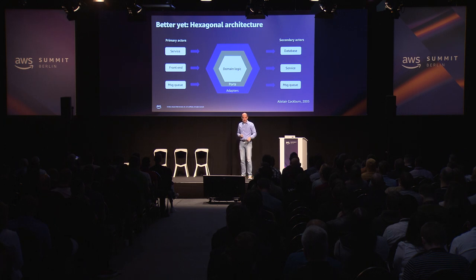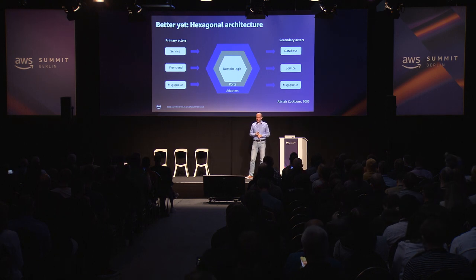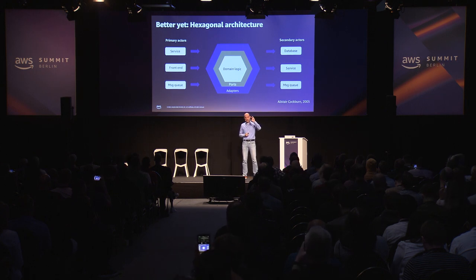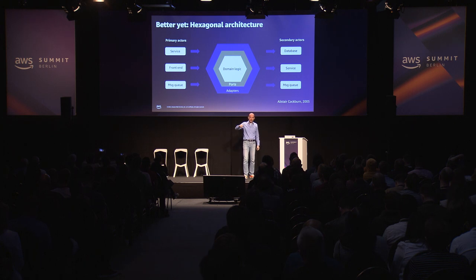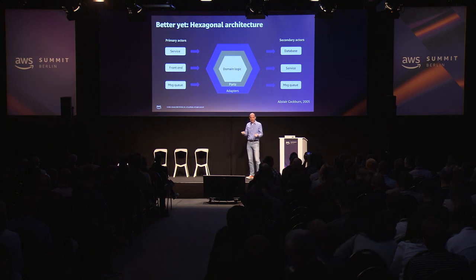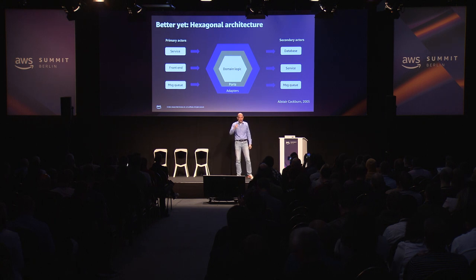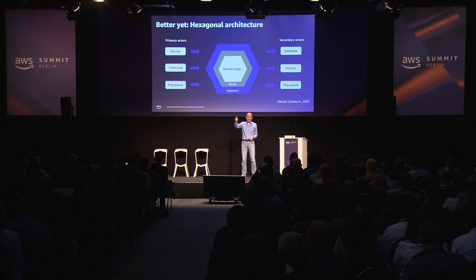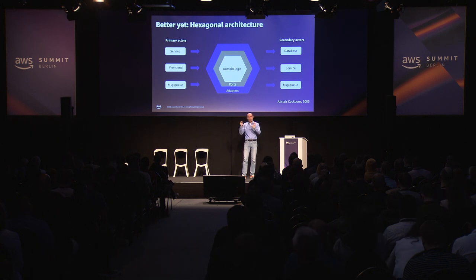If you want to go one step further, learn about hexagonal architecture — there are lots of talks, papers, and books on it. It means you place your company-specific domain logic or business logic in the middle, for instance in a container or a library, and then develop ports and adapters around it. If you want to switch to a different platform, all you need to do is change those adapters while the inner part stays the same. You can use this pattern to attach different databases, different message queues, and different services to your core logic. It also helps advance your application's feature set very quickly. Alistair Cockburn is the one who developed this concept.